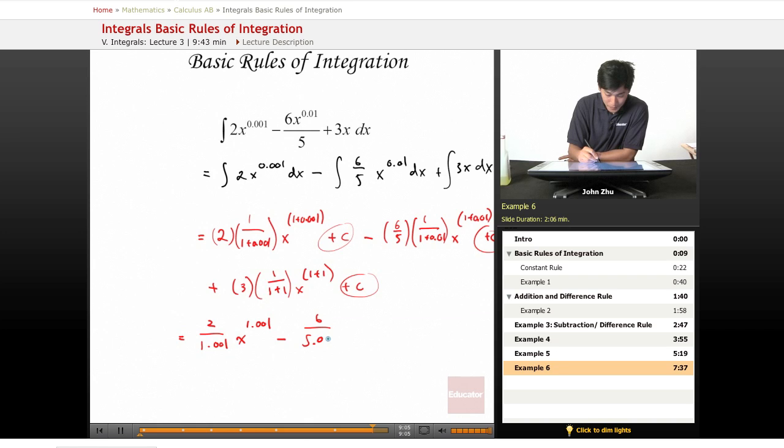5.05, that's 5 multiplied by 1.01, so 5.05 times x to the 1.01 plus 3 over 2 times x squared plus c.